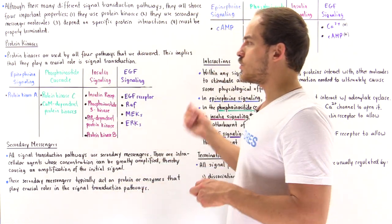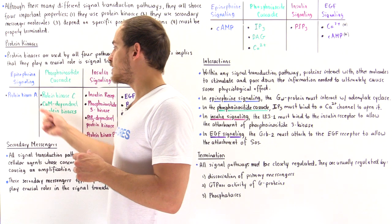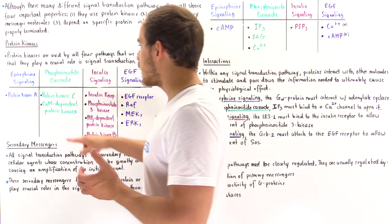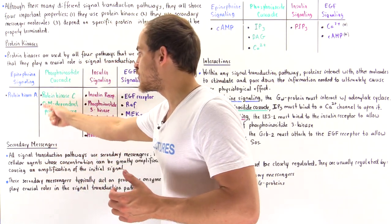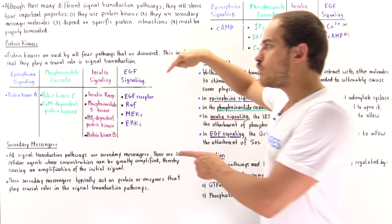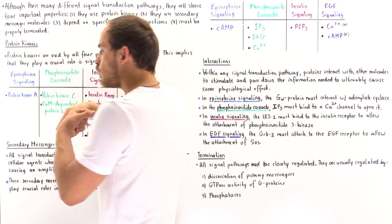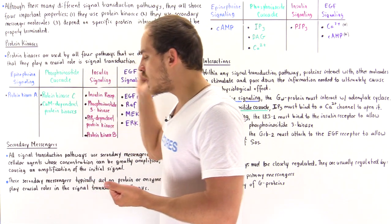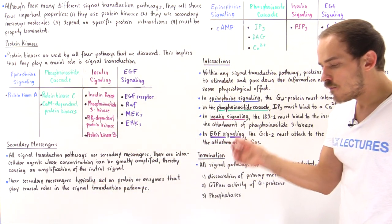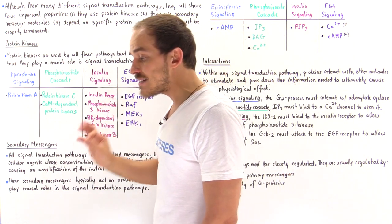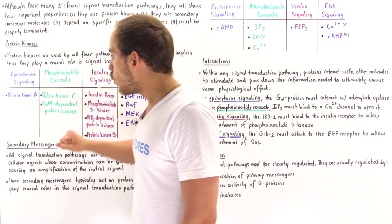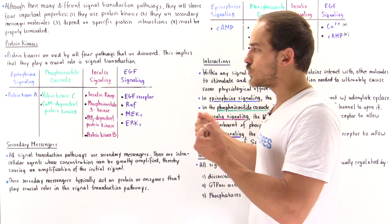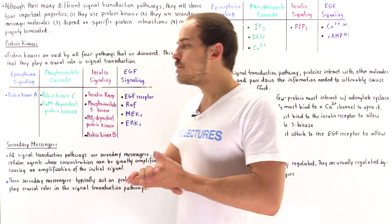In the phosphoinositide cascade, we focused on two different types of kinases: protein kinase C and calmodulin-dependent protein kinases. In this cascade, we used the physiological effect of decreasing or increasing blood pressure. These two types of kinases are crucial for allowing the smooth muscle in the cardiovascular system to actually contract. They stimulate the breakdown of glycogen and the contraction of those smooth muscles, which also depend on ATP to contract.